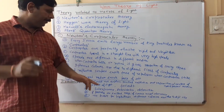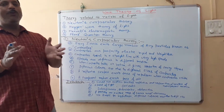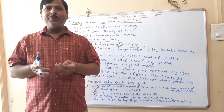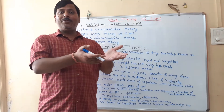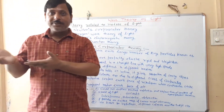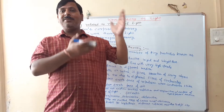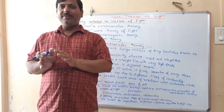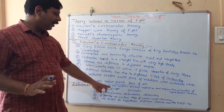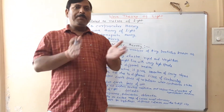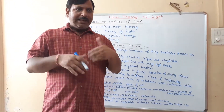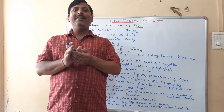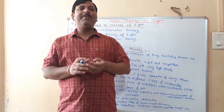Now the drawbacks of Newton's corpuscular theory. The first drawback is that if light falls on a transparent medium, there should be no reflection. But we observe partial reflection and partial transmission, which Newton's theory cannot properly explain. Also, Newton said that the speed of light increases in a denser medium, but we know experimentally that this is not true.